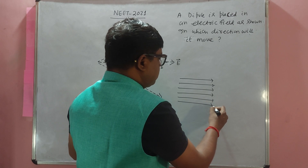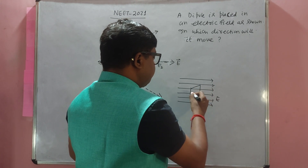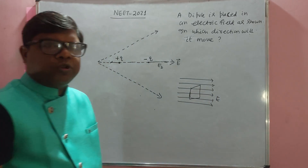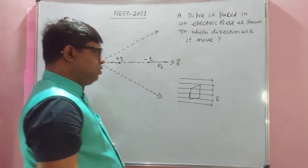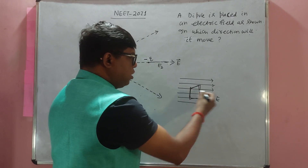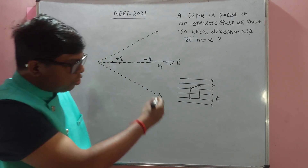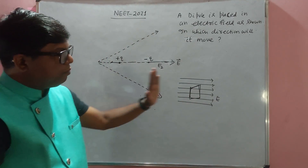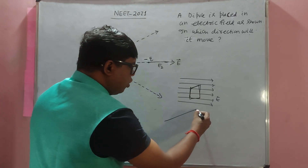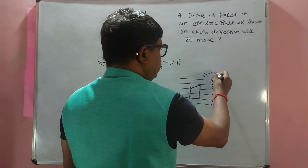When the electric field lines are parallel and equispaced, this gives us a uniform electric field, because the number of field lines per unit area perpendicular to the field gives us the magnitude of the electric field. So equispaced field lines represent a uniform electric field.